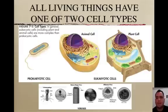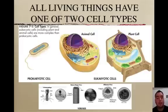All living things have one of two types of cells. So if you're alive, you're cellular — either a prokaryote or a eukaryote.